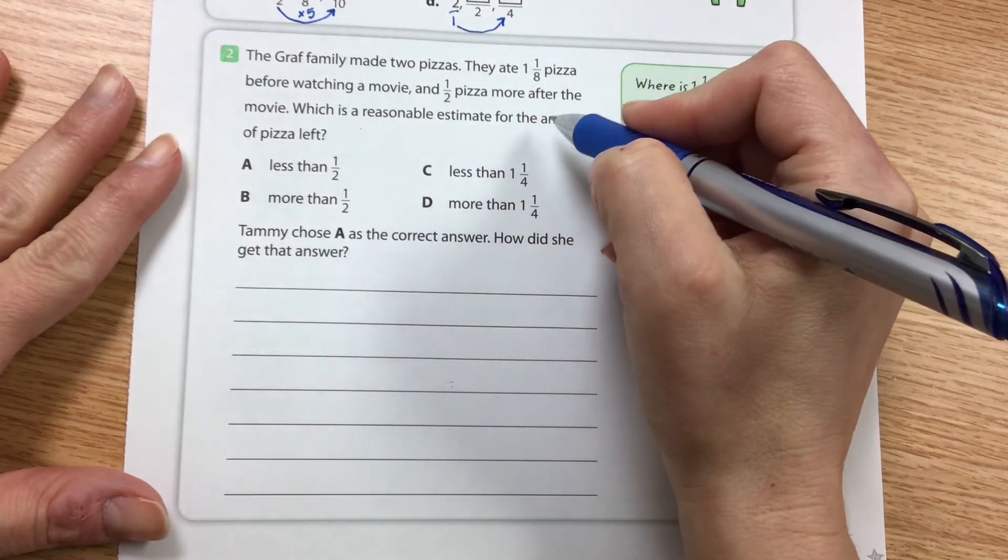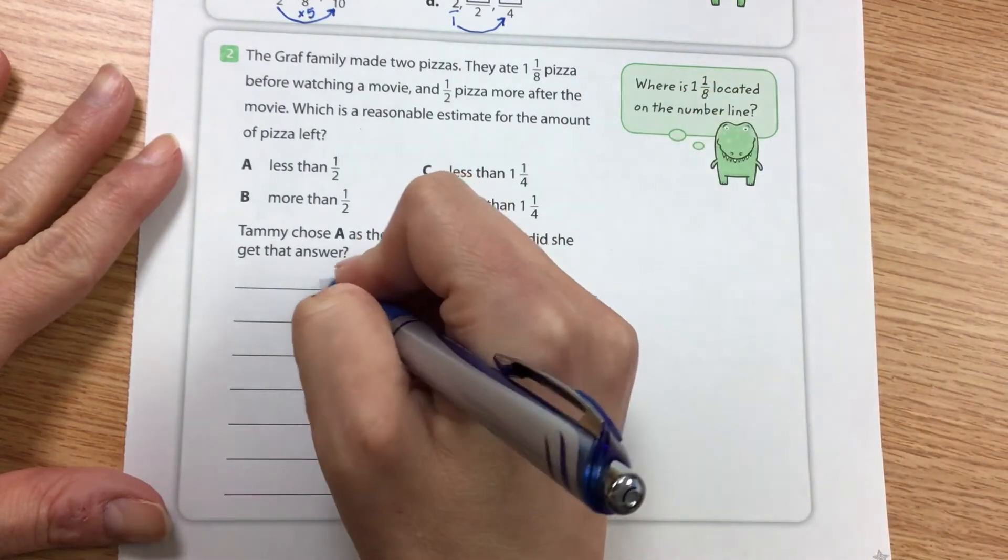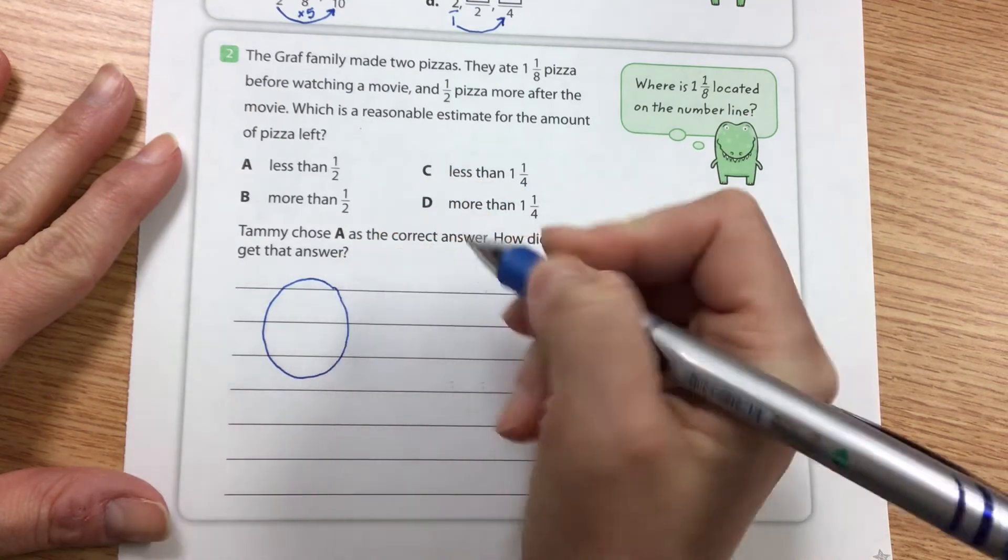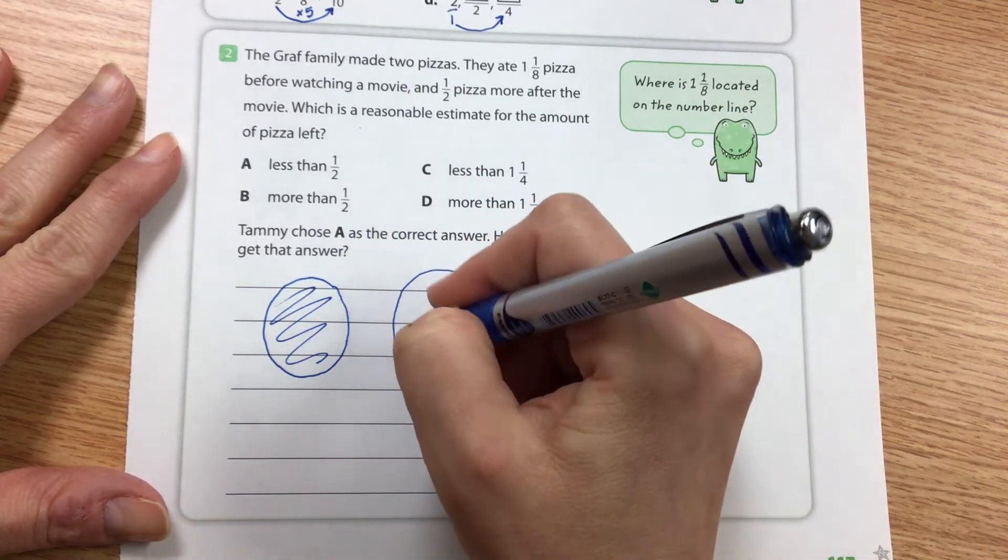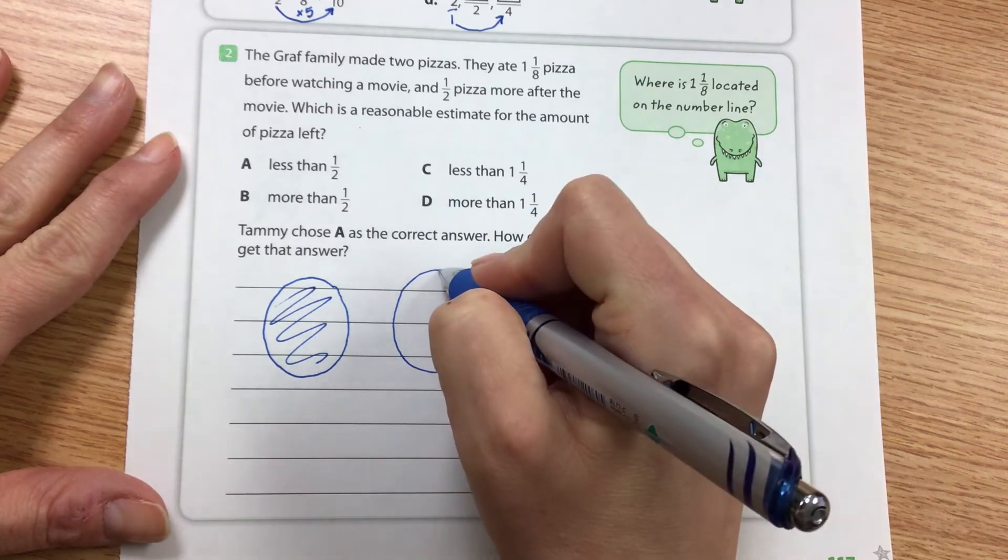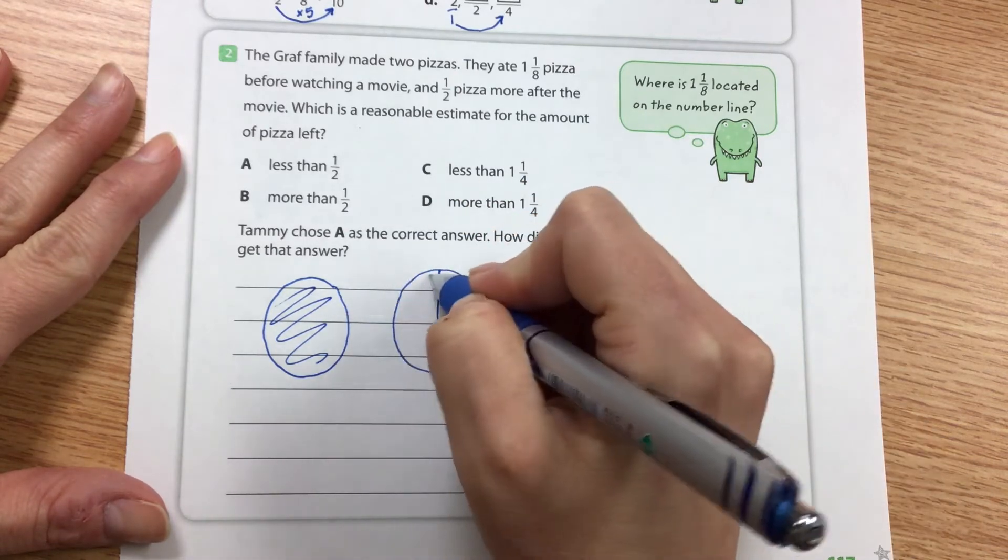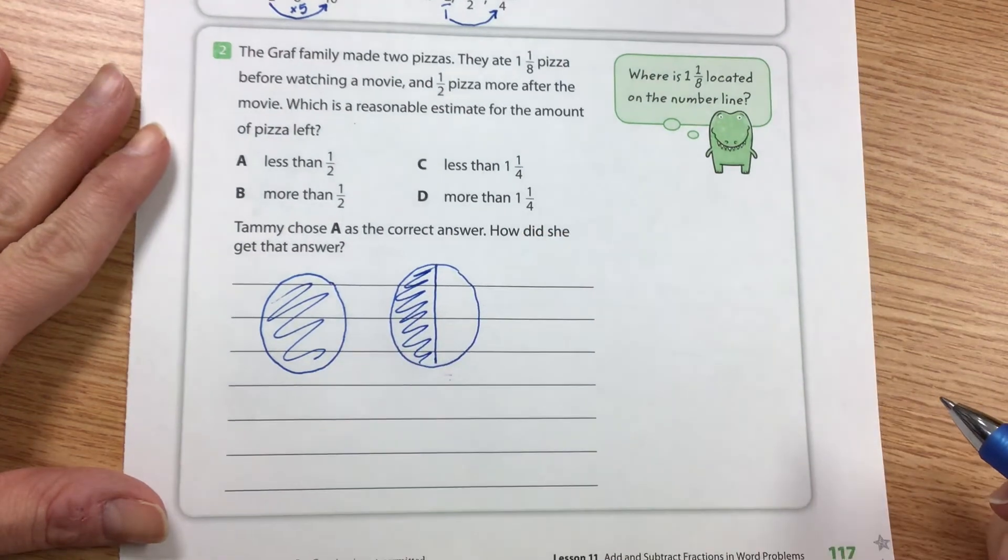So while they're getting ready to watch this movie they eat an entire piece of pizza. So then after the movie they eat half. And remember we are just estimating here.